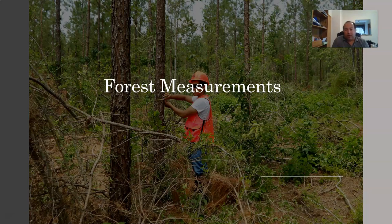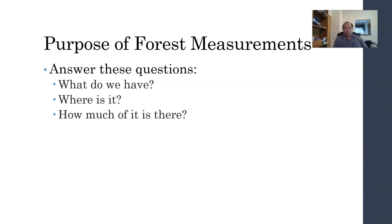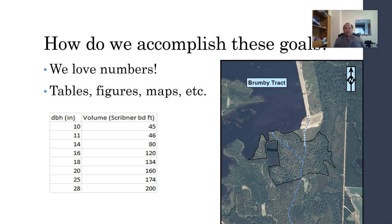The second part of this class is going to be forest measurements and specifically standing tree measurements. In the background, this person is taking a DBH — diameter at breast height. Diameter at breast height, by definition, is 4.5 feet off of the ground. What we're really trying to do there is get the diameter or the width of the tree. The purpose of forest measurements is to answer: what do we have, where is it, and how much of it is there.